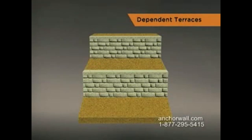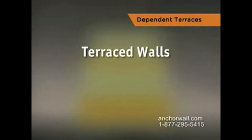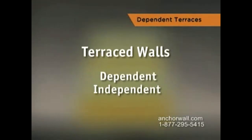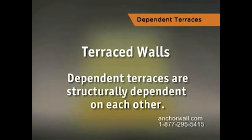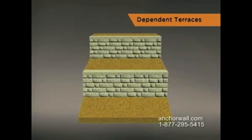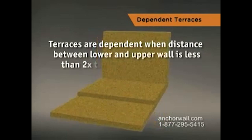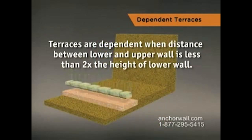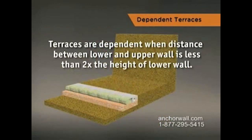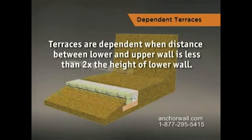There are two types of terraced walls: dependent and independent. Dependent terraces are structurally dependent on each other. For more information about independent terraces, go to the Independent Terrace section. Terraces are dependent when the distance between the lower wall and the upper wall is less than two times the height of the lower wall.